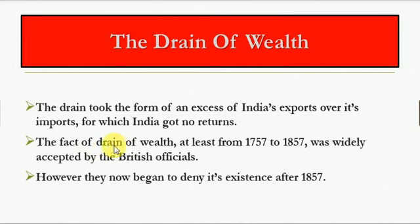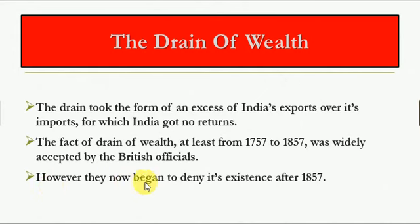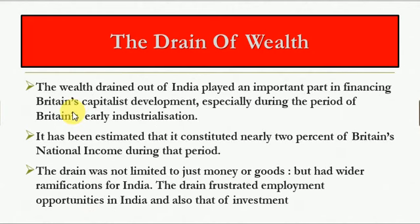The drain took the form of an excess of India's exports over its imports, for which India got no returns. The fact of the drain of wealth, at least from 1757 to 1857, was widely accepted by British officials. However, they began to deny its existence after 1857.